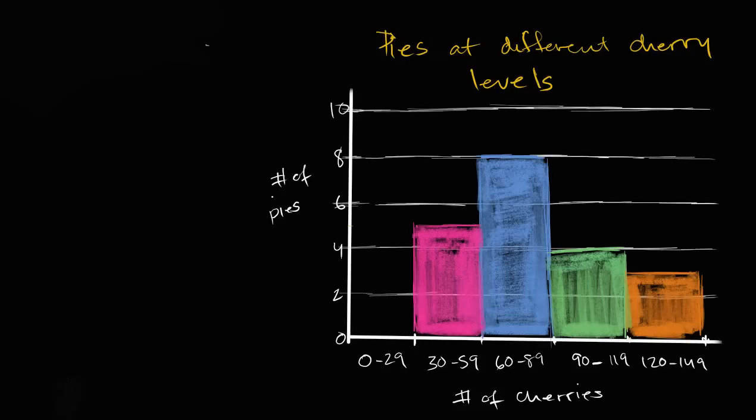Let's say that you have a cherry pie store and you've noticed that there is variability in the number of cherries on each pie that you sell. Some pies might have over 100 cherries while other pies might have fewer than 50 cherries.